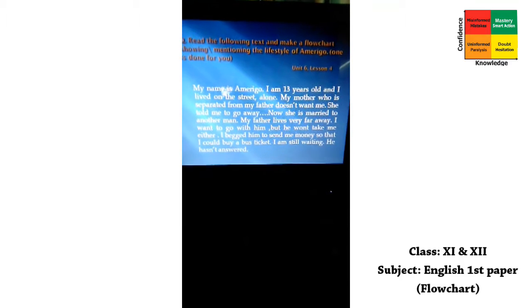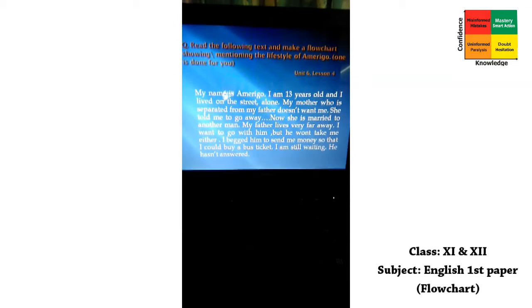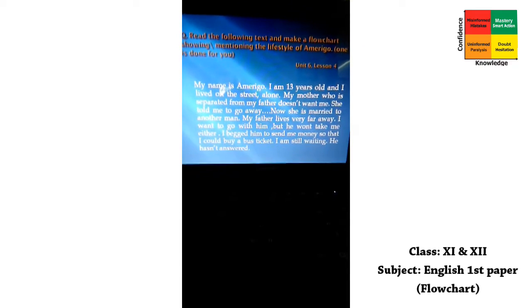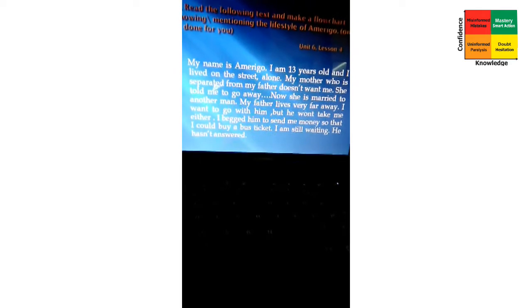Now we are going to do a practical flowchart from your textbook Unit 6, Lesson 4. This is very important even for your examination. The question reads: 'Please read the following text and make a flowchart showing the lifestyle of Amerigo. One is done for you.' So the main subject is the lifestyle of Amerigo.